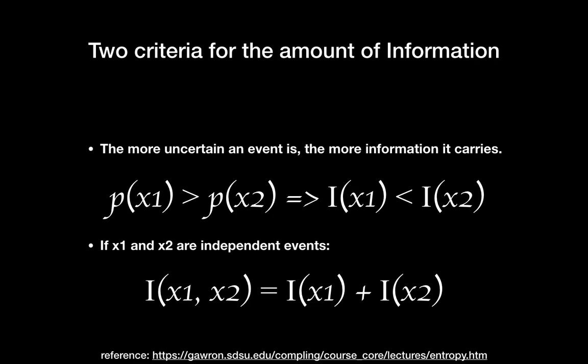What criteria should we consider for amount of information? Well, first, what we want is the more uncertain an event is, the more information it carries, just like we went over with the baby example. And second, if two events are independent, the amount of info for these two events should be just adding these two amounts of info.